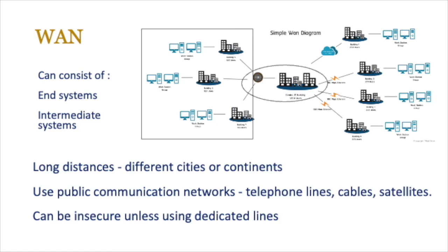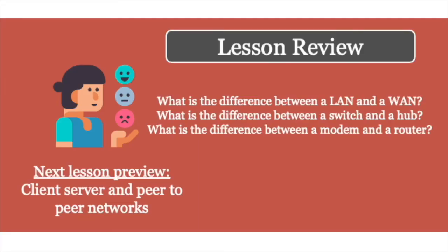Moving on to the wide area network or WAN — these can consist of end systems or intermediate systems. An end system does not connect to any other system, so it could be the endpoint of a wide area network, for example a school LAN which doesn't connect to another LAN. Intermediate systems connect to a lot of these end systems. Think about a city-wide network in Beijing: the city district in the middle would be an intermediate network, and then the outskirts would be the end systems connected to the city. That kind of approach works for wide area networks.